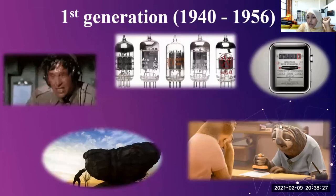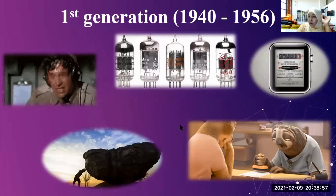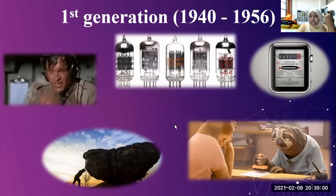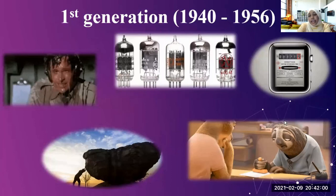Considering all these problems — heat, size, speed, and electricity — the second generation was invented. Sometimes vacuum tubes could even blast due to extreme heat. So considering all these issues, they came up with the second generation.